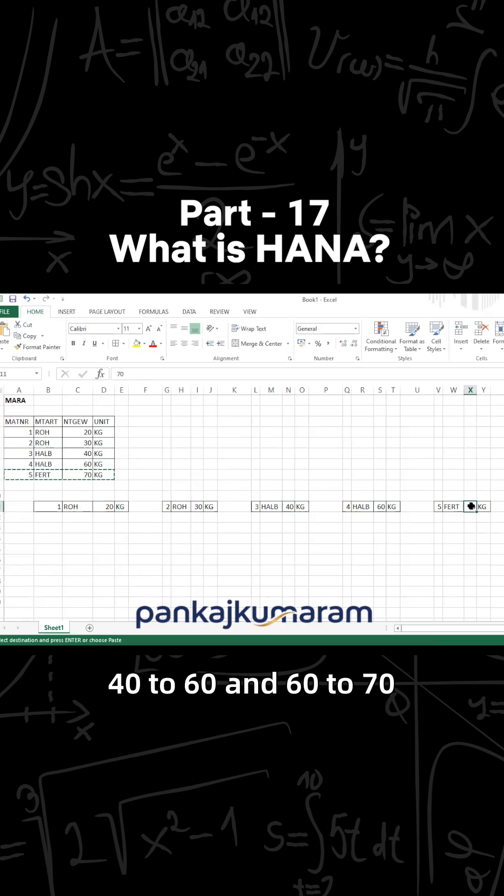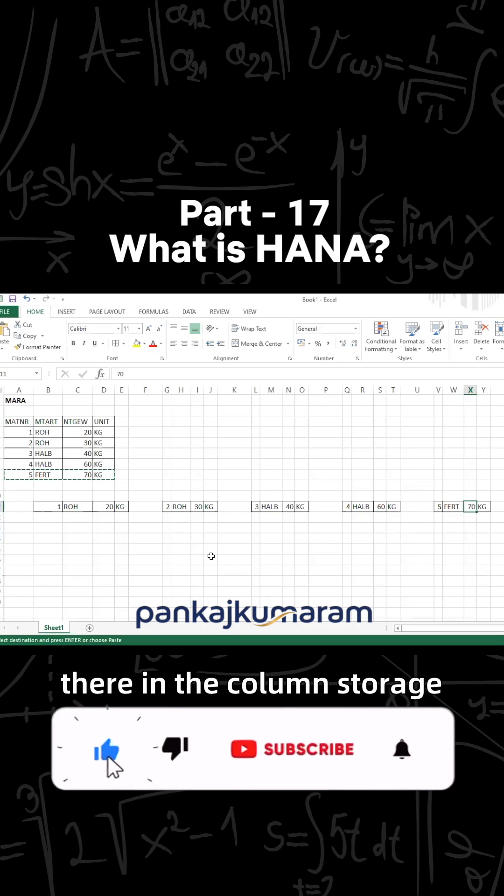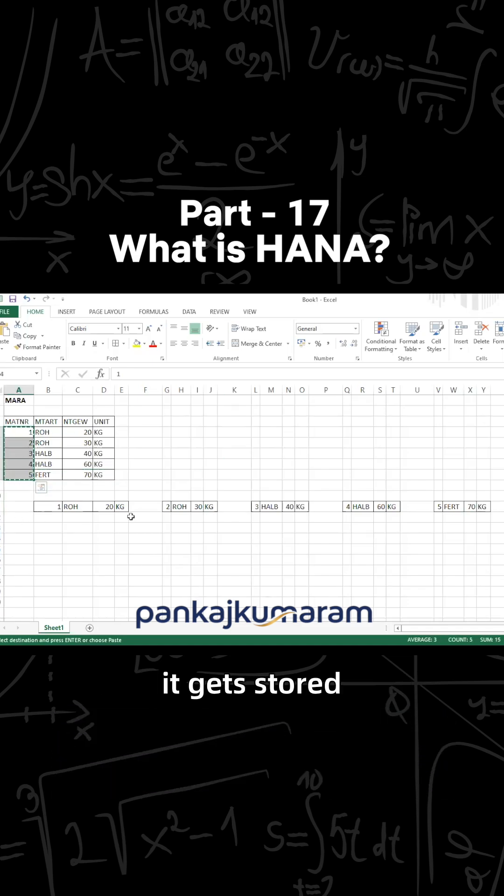But if it is there in the column storage, how does the data get stored in the column store? See, it gets stored sequentially only, but column-wise it's going to get stored. One, two, three, four, five will be storing over here.